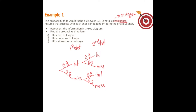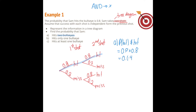Part a: find the probability that Sam hits two bullseyes. Hitting two bullseyes means he needs to hit and then hit again. In probability, the word 'and' refers to multiplication, so we have 0.8 times 0.8, giving a probability of 0.64.